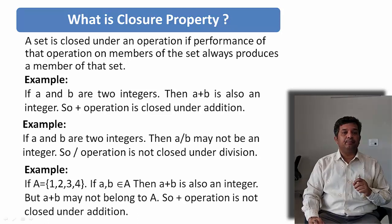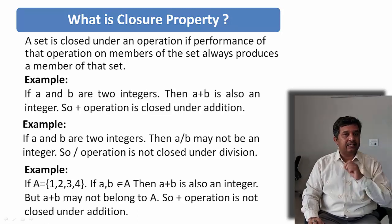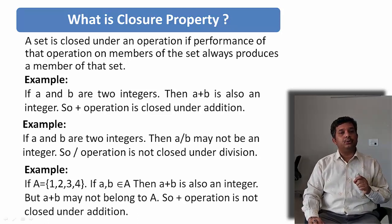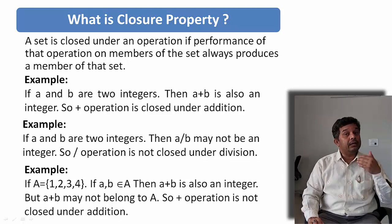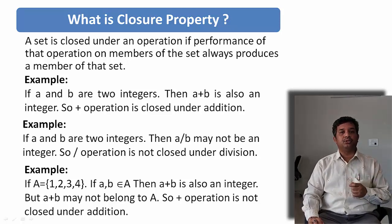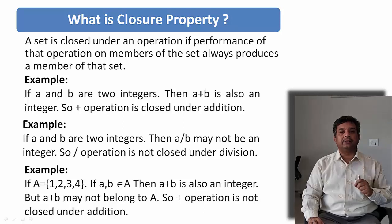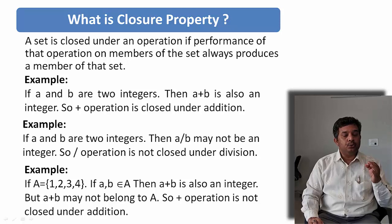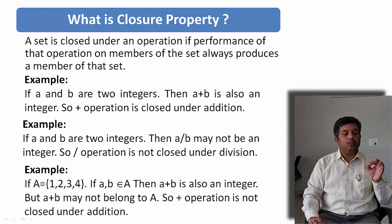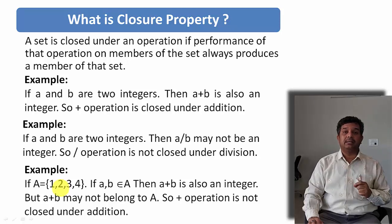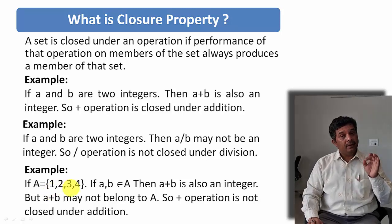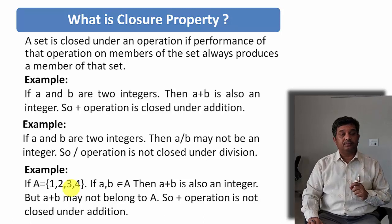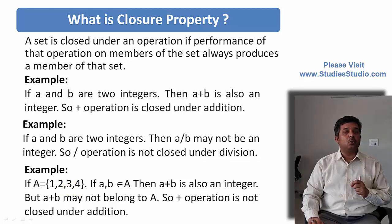Let us take one more example. We have a set containing four elements: 1, 2, 3, and 4. Let us try to perform the addition operation. If I take any two elements and perform addition — for example, 2 plus 4 is 6 — and 6 is not part of this set. So for this set, I cannot say the plus operation is closed. Now you understand what is closure property.